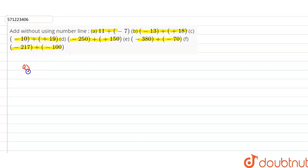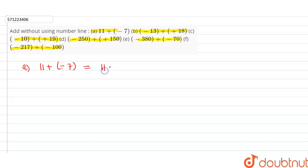Part A is 11 + (–7). Plus minus is minus, therefore 11 – 7, and 11 – 7 is 4.